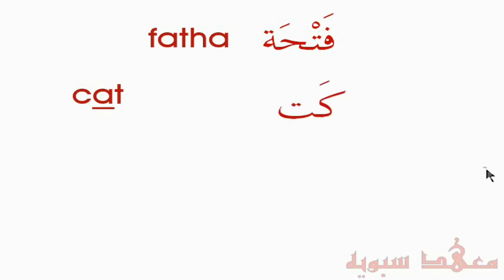When we say the word 'cat,' notice the A sound — it's an A sound. That's the same sound as a Fatha. I've transliterated 'cat' into Arabic. We have the Kaf, which makes the K sound, and then we have the Ta, equivalent to the T in English. So this says 'cat.' Notice the vowel is on top of the letter, not after it.